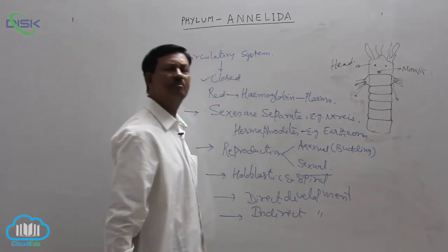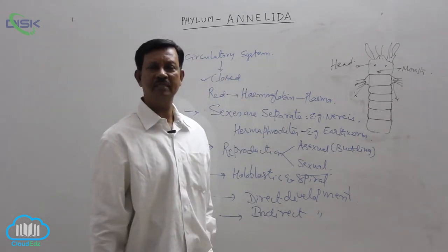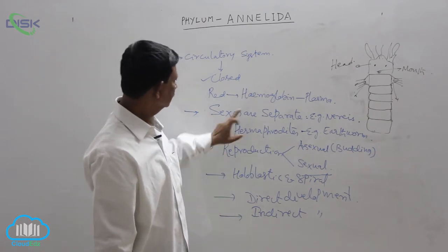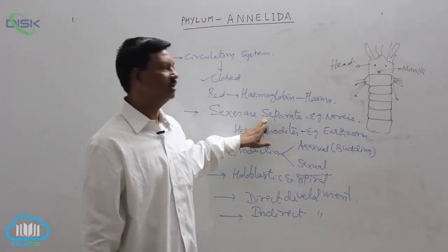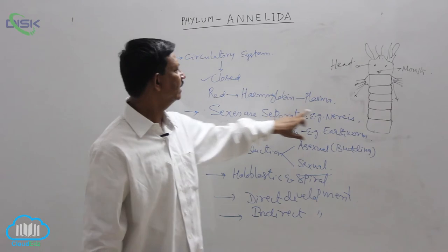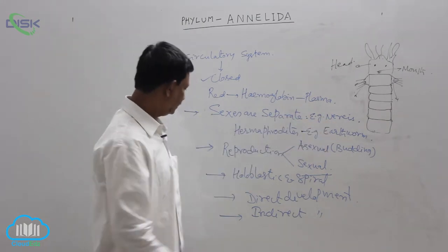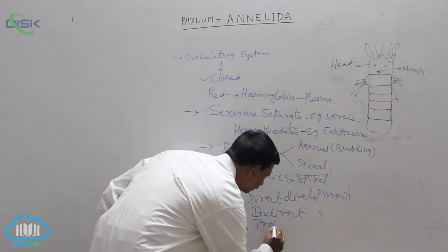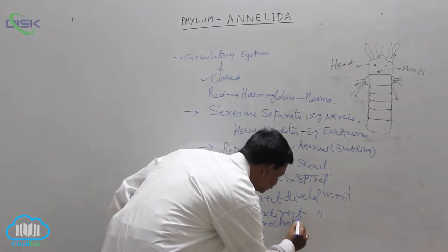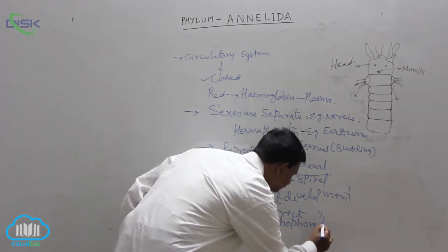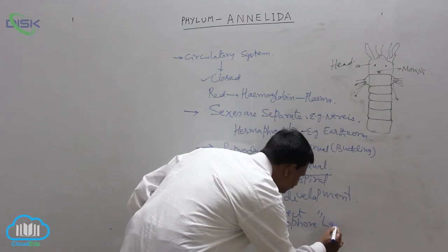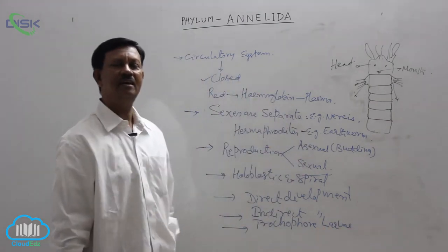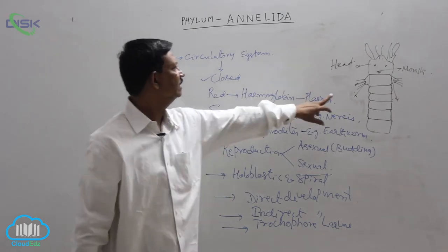Indirect development means the presence of a larva. It is present in dioecious animals — example is Nereis. Development includes a larva known as the trochophore larva. Trochophore larva is present in the development of Nereis.